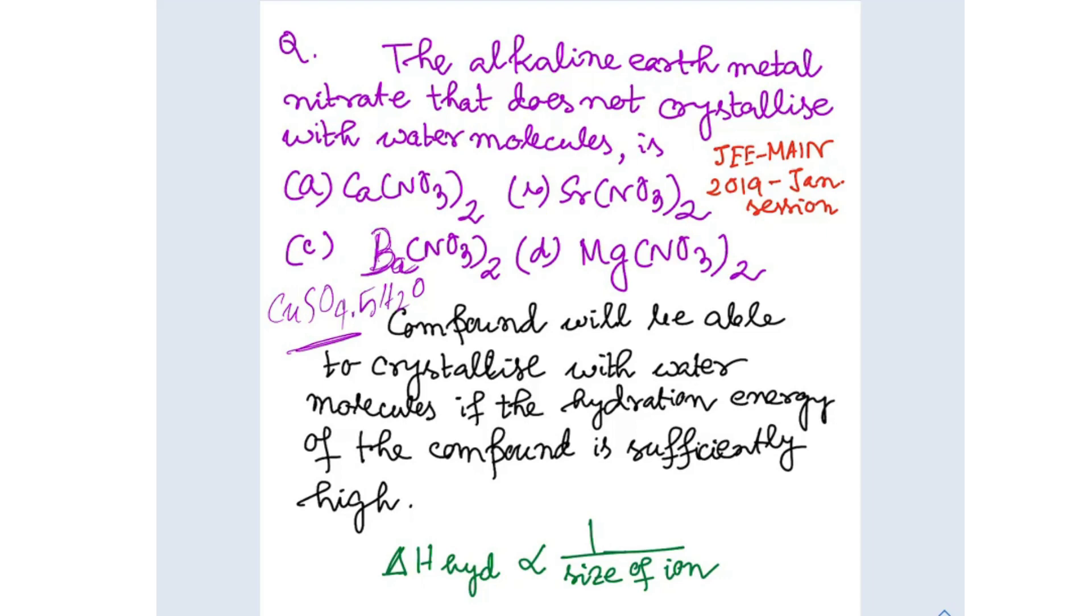The hydration enthalpy depends on the cation size. Smaller cation size means higher hydration enthalpy. If the hydration enthalpy is very low, then the compound will not be able to crystallize with water. This happens for the largest cation.